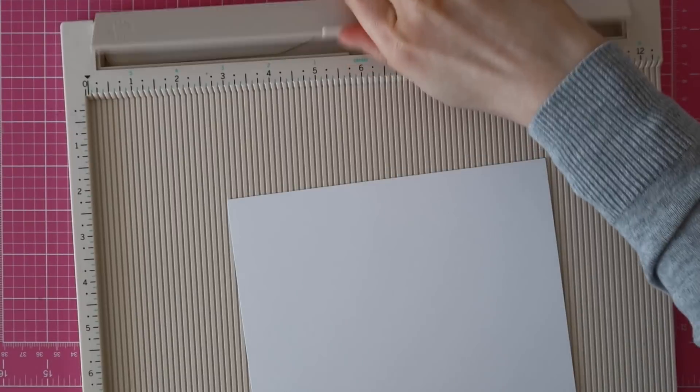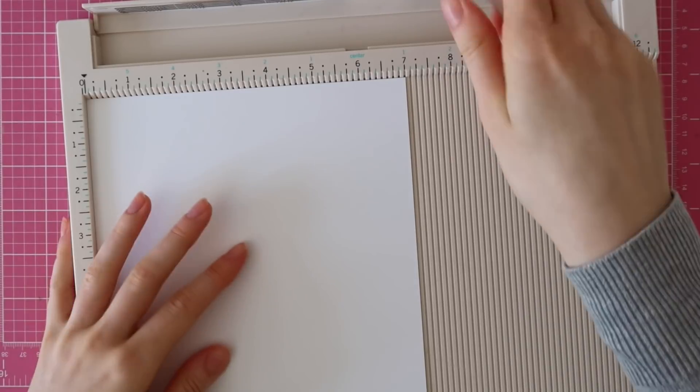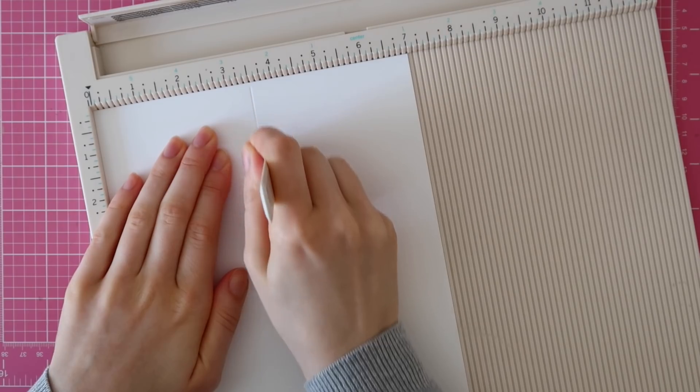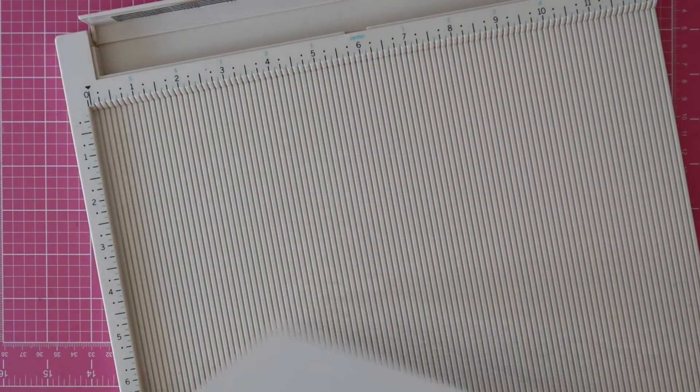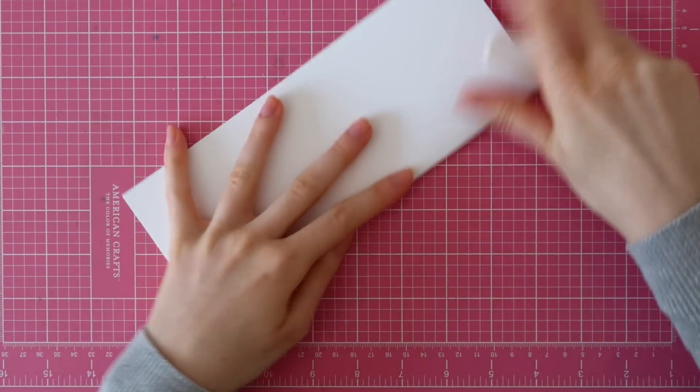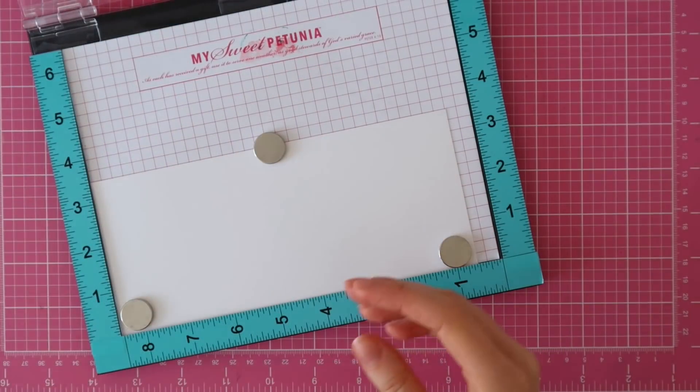To create this long card, I'm starting out with a Neenah SolarWise 110 lb card base and I cut this to 7 inch by 9 inch. I scored that at 3.5 so that my finished card would measure 3.5 inch by 9 inch.